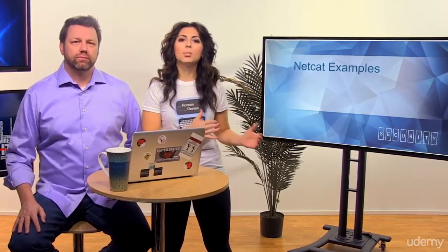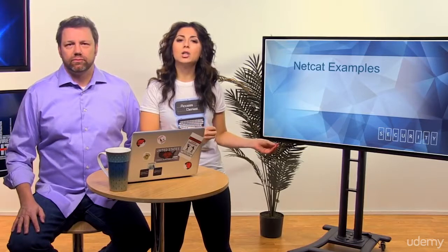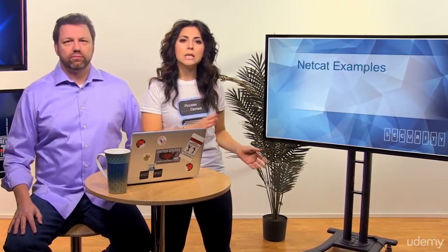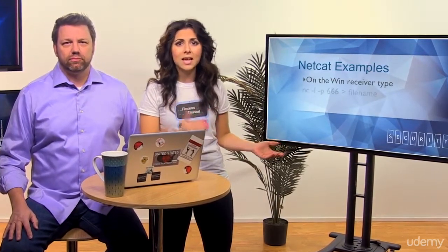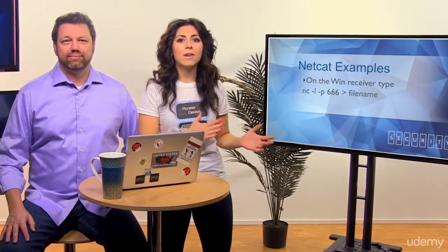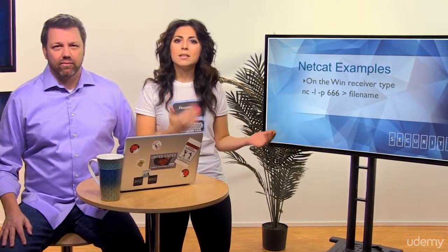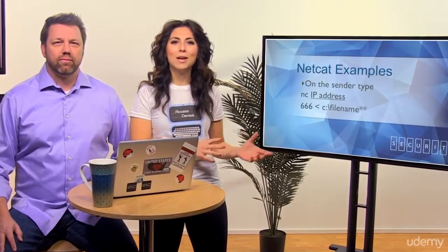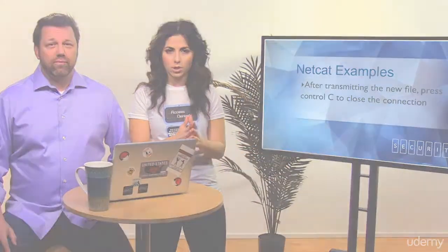The next example is uploading a file to a server that you have already hacked and placed NetCat on as a listener. The top command is setting up the listener on port 666, and it is attempting to receive a file called file name. The sender is connecting to the specific PC on port 666 and sending the file called file name. Once you have performed the transmission, you press Ctrl+C to close the connection.